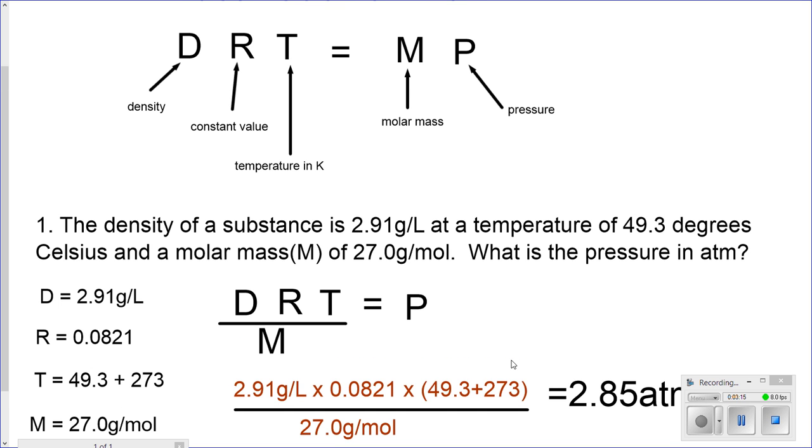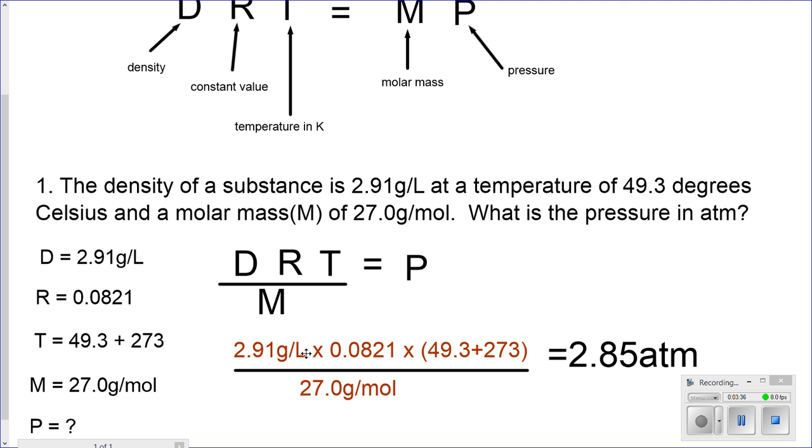Therefore, the only time in which I use this law is when I have specifically the word density involved in the question. Solving for the variable that's missing, in this case P, I move the M down, DRT over M equals P, plug in your values and the answer should be 2.85 atm. This is the third variation of the ideal gas law. I hope this helps you out.